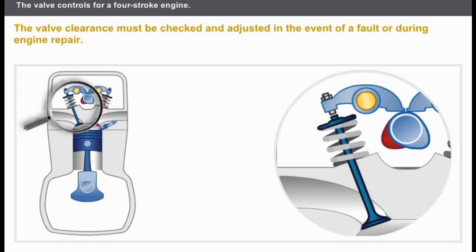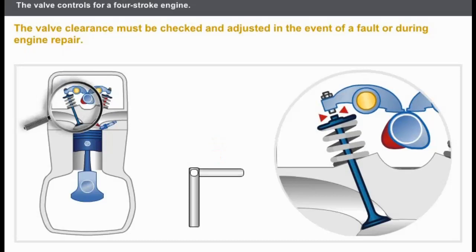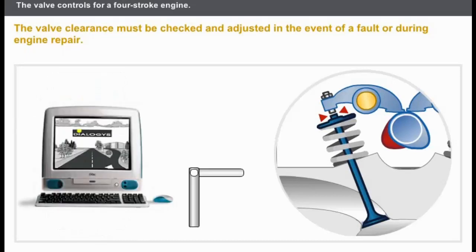The clearance advised for the exhaust valves is usually greater than for the intake valves. The valve clearance must be checked and adjusted in the event of a fault or during engine repair. The clearance should be in line with the recommended specifications to ensure good engine functioning. Click on the set of shims to see the clearance increase. You should consult the technical documentation to find out what clearance has been recommended for each engine.